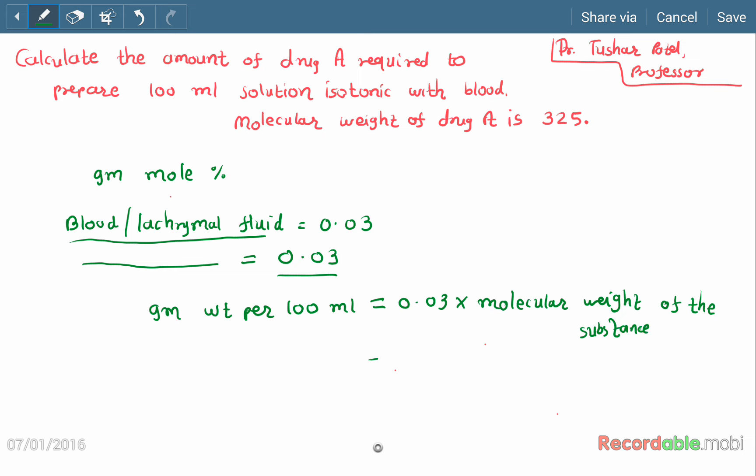So here, 0.03 multiplied by 325, we will get the answer 9.75 gram per 100 ml. So if we dissolve 9.75 gram of drug A with molecular weight of 325 in 100 ml of water, we will get an isotonic solution with the blood or lacrimal fluid.